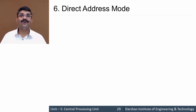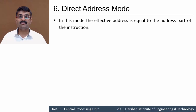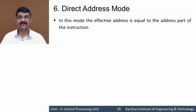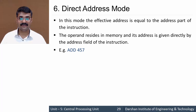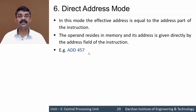Next is direct address mode. Here the operand specified in the instruction is an address itself — the actual data is available at that address. The effective address equals the address part of the instruction. Effective address means the address where the actual operand or data is located. For example, ADD 457 — the data resides at address 457. The content of memory at address 457 would be added to the accumulator and the result stored back in the accumulator.